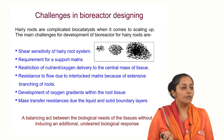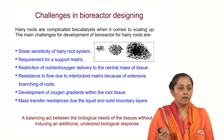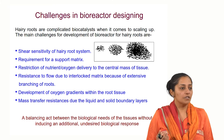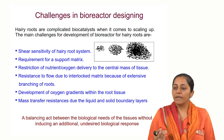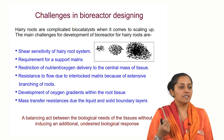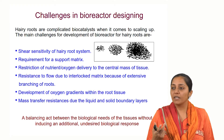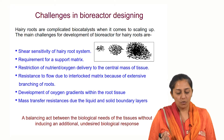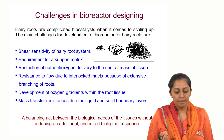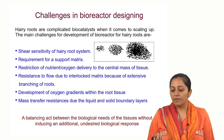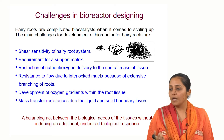They are highly sensitive to even the material of the support. Generally stainless steel is the material used in reactors, but it depends on the species — sometimes it is found to be very specific and sensitive to the material of the inner parts of the reactors. So an inert matrix is needed. There is also restriction of nutrient or oxygen delivery to the central mass of the tissue, and resistance to flow due to the interlocked matrix.